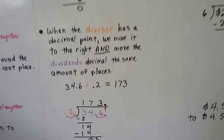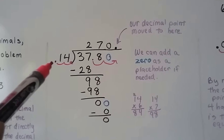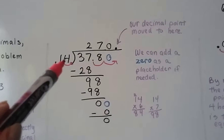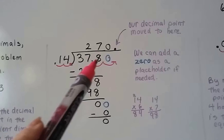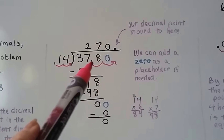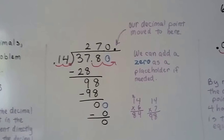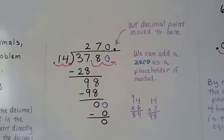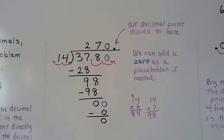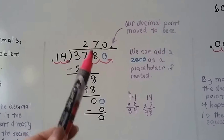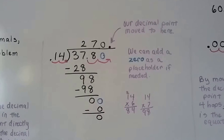So in this example we had 0.14 — fourteen hundredths. We need to move it back two hops, which means we also have to move it back two hops in 37.8, thirty-seven and eight tenths. That leaves an empty space, so we add a zero as a placeholder. Then we do our division as we would normally with long division, and our decimal point is going to go up into the quotient behind that zero.